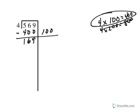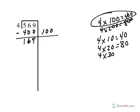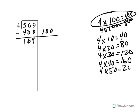Now I cannot subtract any more groups of 100 out of my 169. So I'm going to come over here with my divisor and multiply times 10 because it's the next greatest place in my place value. 4 times 10 is 40, 4 times 20 is 80, 4 times 30 is 120, and 4 times 40 is 160.